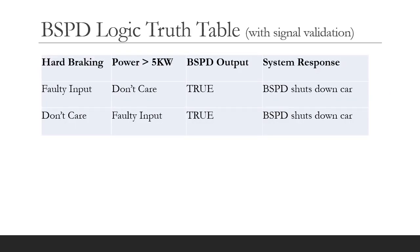The BSPD truth table then looks like this: if you get a faulty signal, it doesn't matter about the other signal because the BSPD will immediately shut down the car. And that is true of either input.